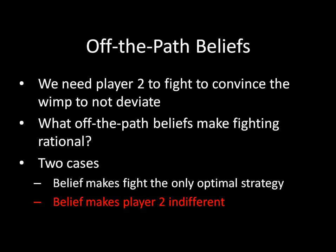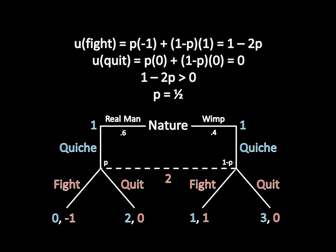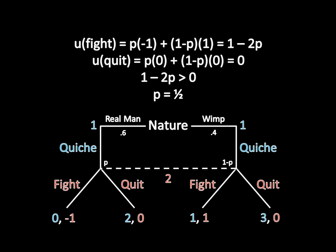We can now move on to the second class of equilibria. This time, we look for off-the-path beliefs where player two is indifferent between fighting and quitting. The indifference case is something that new students often forget about, so make sure that you check for it in your own problems. Fortunately, we have already done the math to calculate the indifference condition — we just want the p that makes these utilities equal, rather than the p that makes fighting better than quitting. When p is exactly equal to 1/2, player two is indifferent. When player two is indifferent, she can fight as a pure strategy, quit as a pure strategy, or mix between the two.